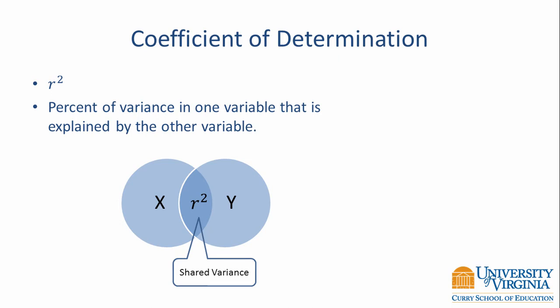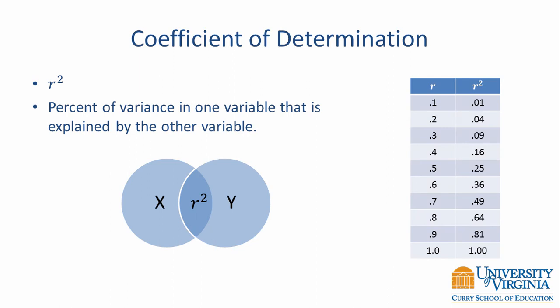The greater the value of r squared, the more overlap between the two circles. If the correlation were 1, then 100% of the variance in x would be accounted for by y. The table on the right shows values of r and r squared. Even when the correlation is 0.5, only 25% of the variance in one variable is accounted for by the other. At 0.7, you're still explaining less than 50% of the variance. This is one reason people use the rule of thumb that 0.8 is a strong relationship — at 0.8, the coefficient of determination is 0.64, meaning 64% of the variance is accounted for.